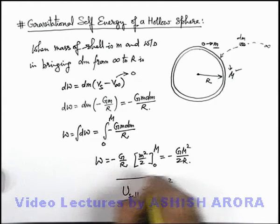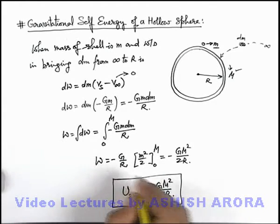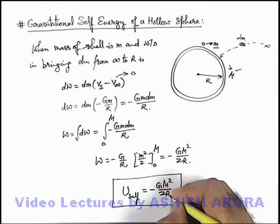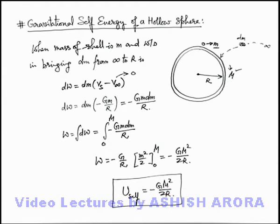This amount of work, −GM²/2R, is done in assembling mass M into a spherical shell of radius R, which we treat as the gravitational self-energy of this hollow sphere. As you can see, −GM²/2R is the amount of work done in bringing all the particles of this shell from infinity to a surface of radius R.